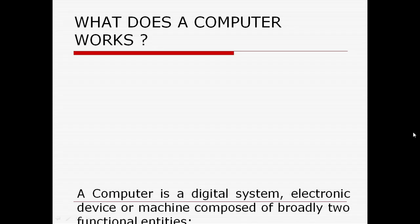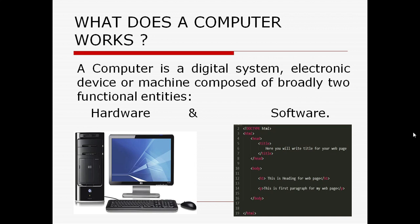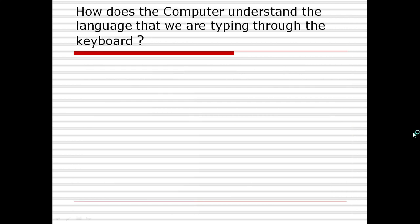A computer is a digital system, electronic device, or machine composed of broadly two functional entities: hardware and software. Detailed definition of computer has already been explained in my previous class. Now one question obviously comes in your mind: if computer is a digital system or machine, then how does the computer understand the language that we are typing or inputting through the keyboard?